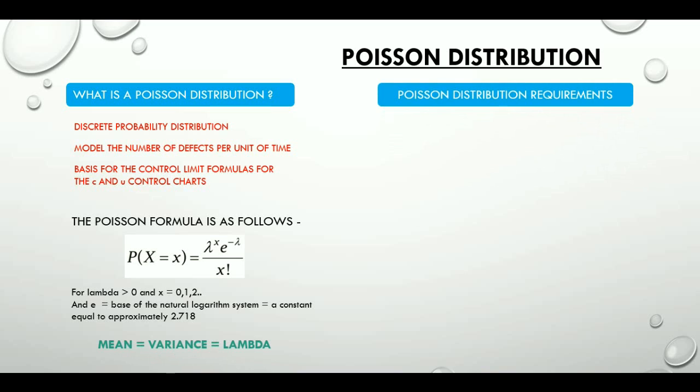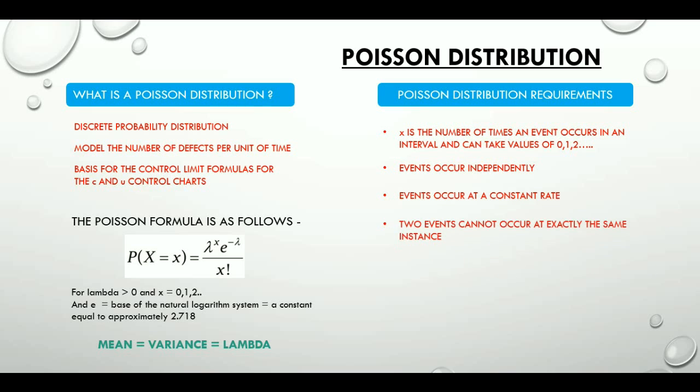Firstly, the number of times an event occurs in an interval can take values of 0, 1, 2, etc. Events occur independently and at a constant rate. Two events cannot occur at exactly the same instance. And the probability of an event in a small interval is proportional to the length of the interval.